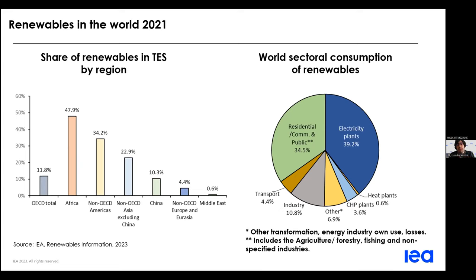Still, in the OECD, where you can see the share is one of the lowest, the renewables development has been significant in the last years, especially to generate electricity. But the share is still low because there are energy-intensive final consumption sectors, such as the transport sector, that are still heavily reliant on fossil fuels. Concerning sectoral consumption on the right, the green slice is mainly composed of traditional use of biomass. The electricity plant supply is what we should pursue to expand, since we would like to electrify the final consumption sector as much as possible, consuming electricity produced by renewables.